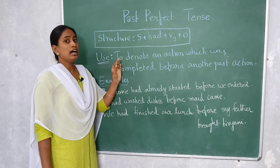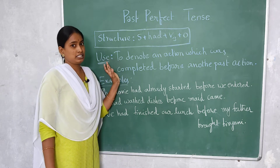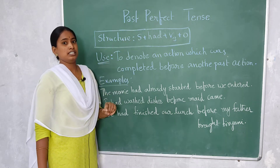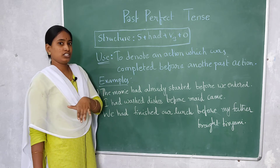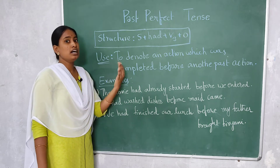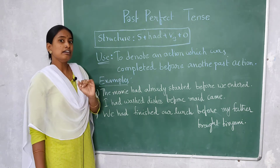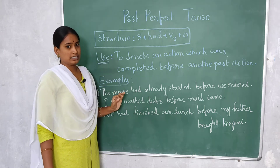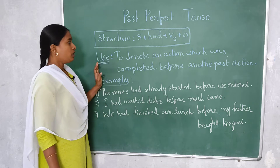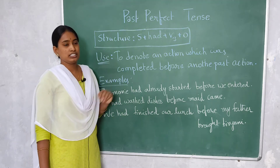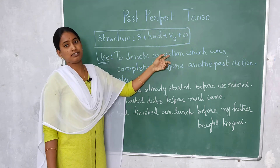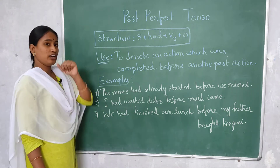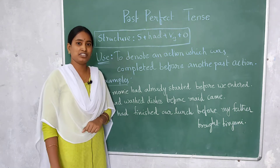For the first action — the one that was completed first — we use past perfect tense. For the second action, which completes after the first, we use simple past tense. The structure is: subject + had + V3 + object. Now let's see some examples, and you have to tell me which action happened first and which happened second.